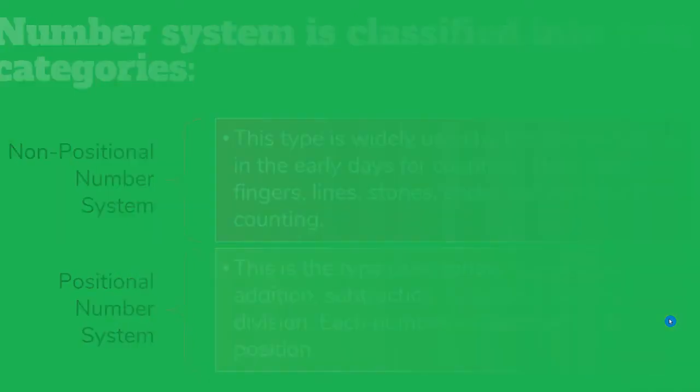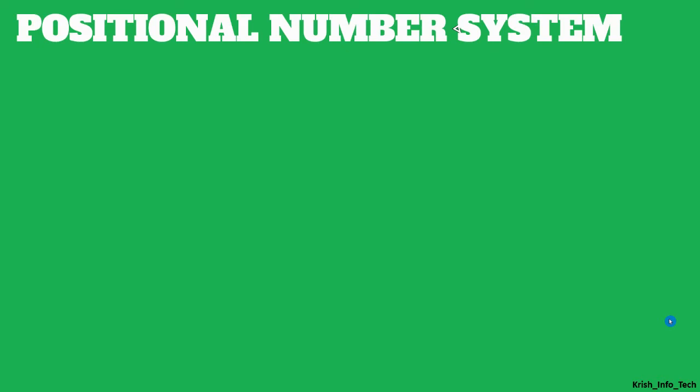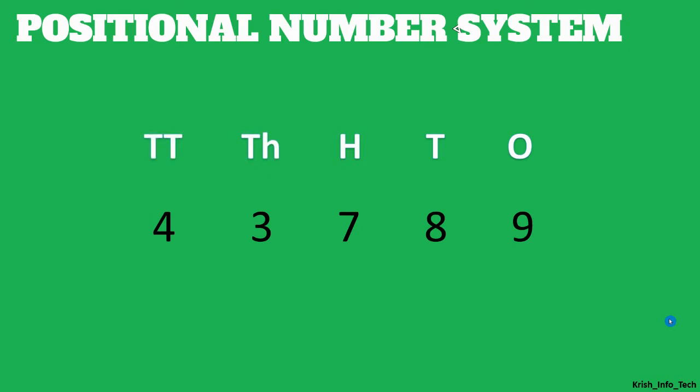The positional number system is what we use nowadays for calculations like addition, subtraction, multiplication, and division. Each and every number is identified by its own position — we give a position value to each and every number. For example, with the number 43789, starting from the right: 9 is in the 1's place, 8 is in the 10's place, 7 is in the 100's place, then 1000's place, then 10,000's place. That is what is called the positional number system.